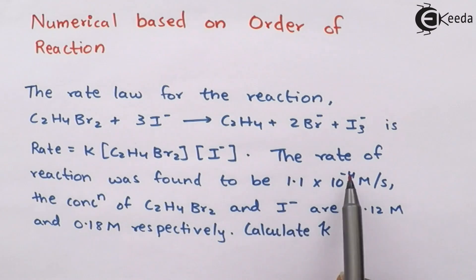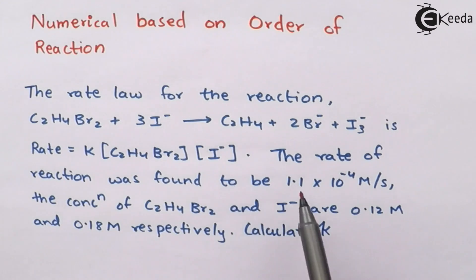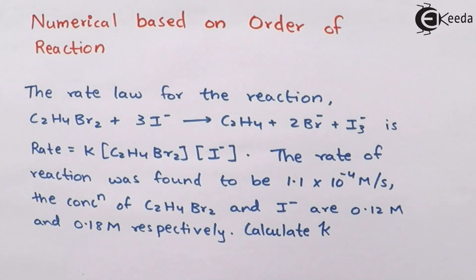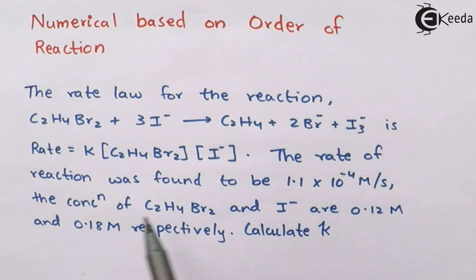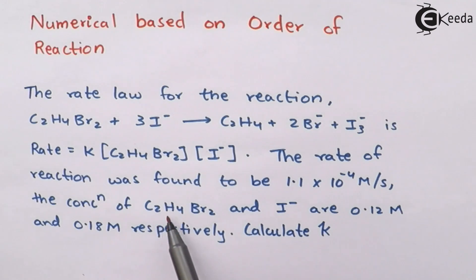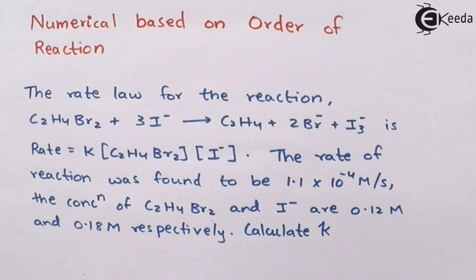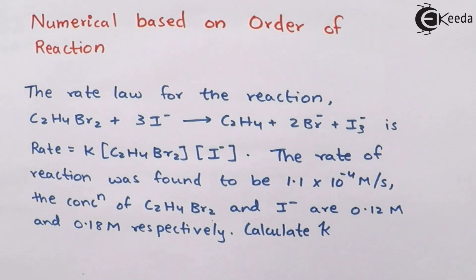The rate of the reaction was found to be 1.1 × 10⁻⁴ moles per second — or more precisely, moles per dm³ per second. The concentration of C2H4Br2 and the concentration of I⁻ are 0.12 molar and 0.18 molar respectively. Based on that we have to calculate the value of rate constant K.